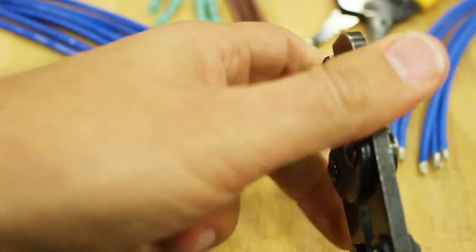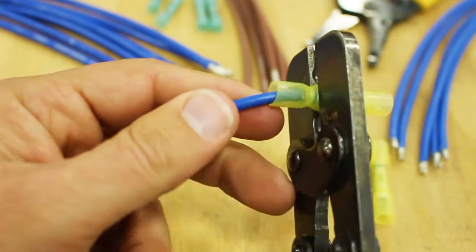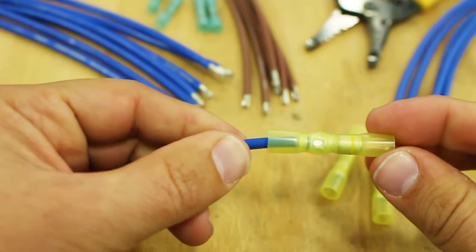Now the butt splice is crimped with the proper tool. This crimp bends the connector around the wire which creates a solid connection.